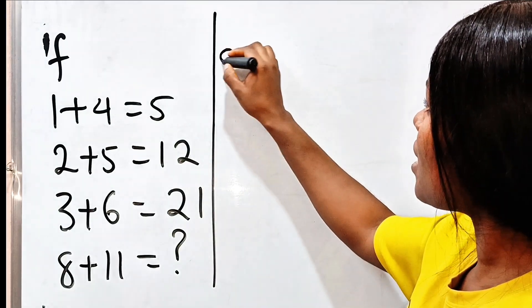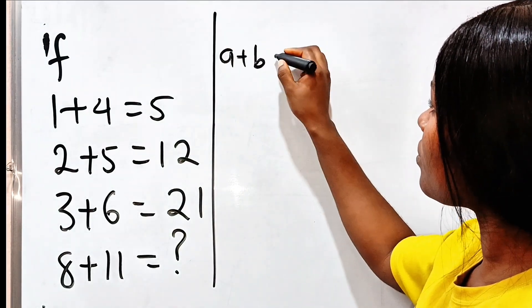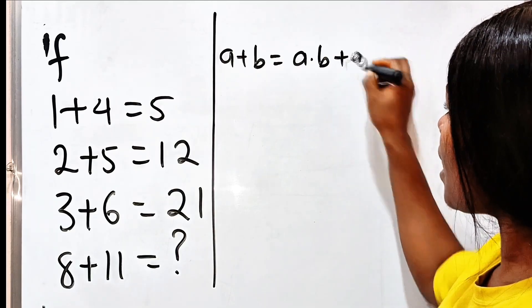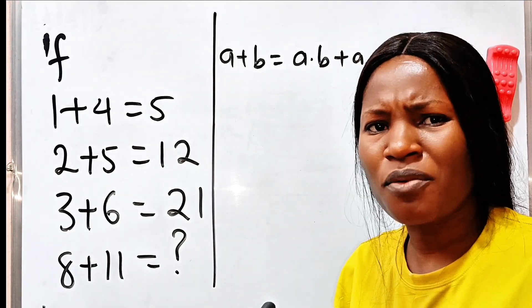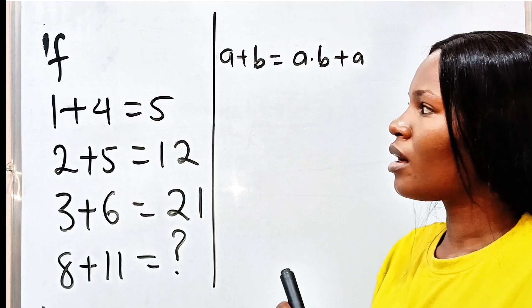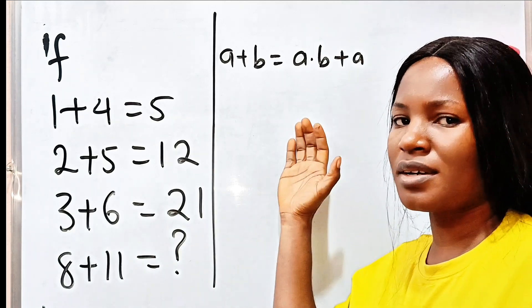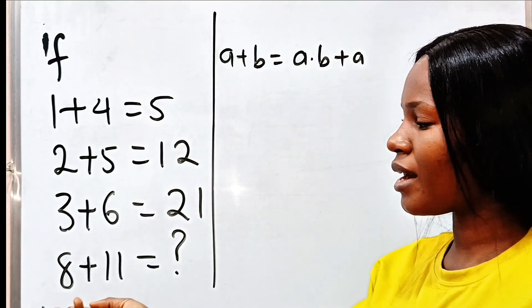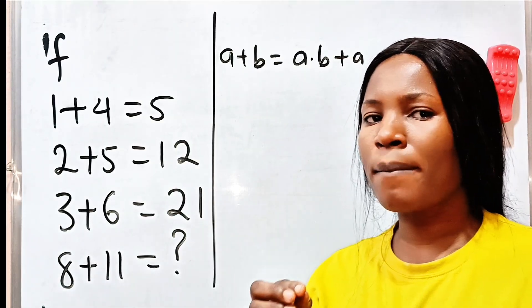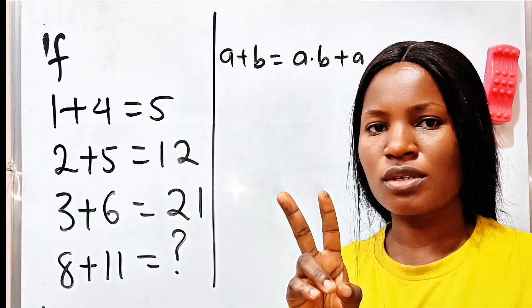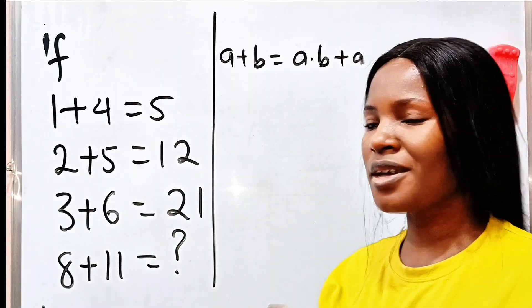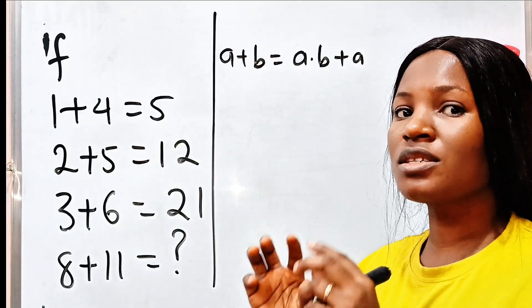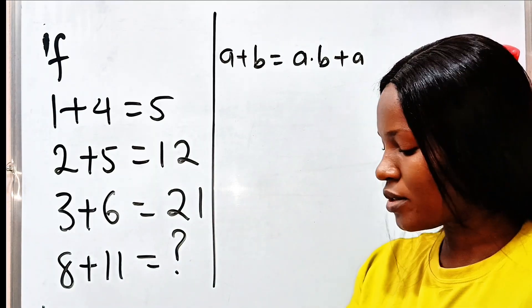So, the formula simply means a plus b is equal to a multiplied by b plus a. That should be the formula, right? So, if we should apply that formula here, then it's going to be easy. Let's go straight and get the value. And then remember, I have another method that we can use to get this. So, stay built and see that second method. Because that second method is tricky, but it will also give you the same result.